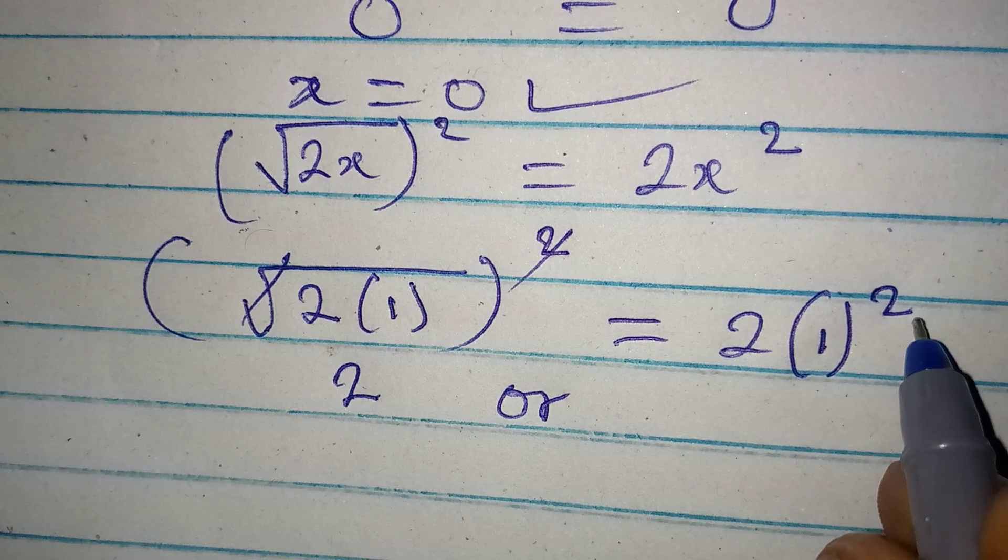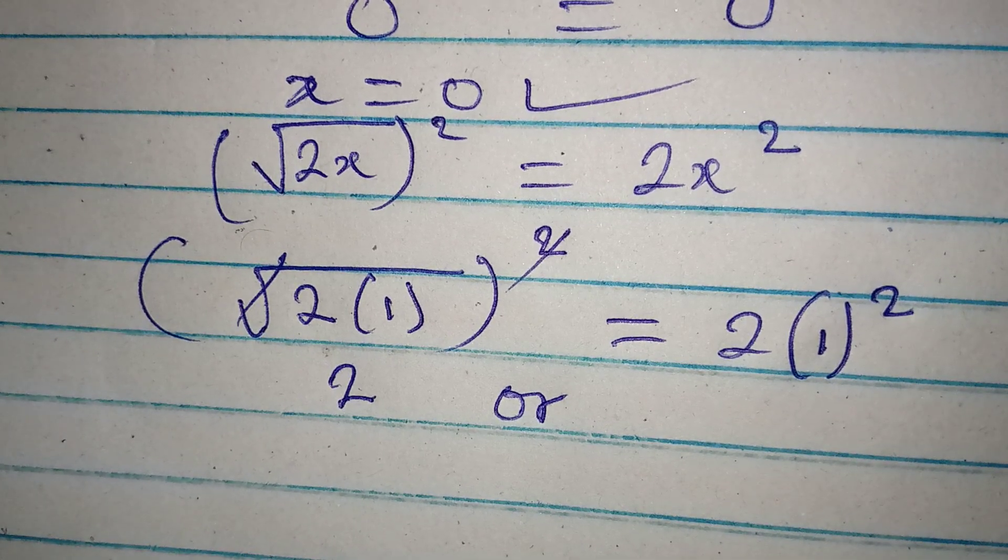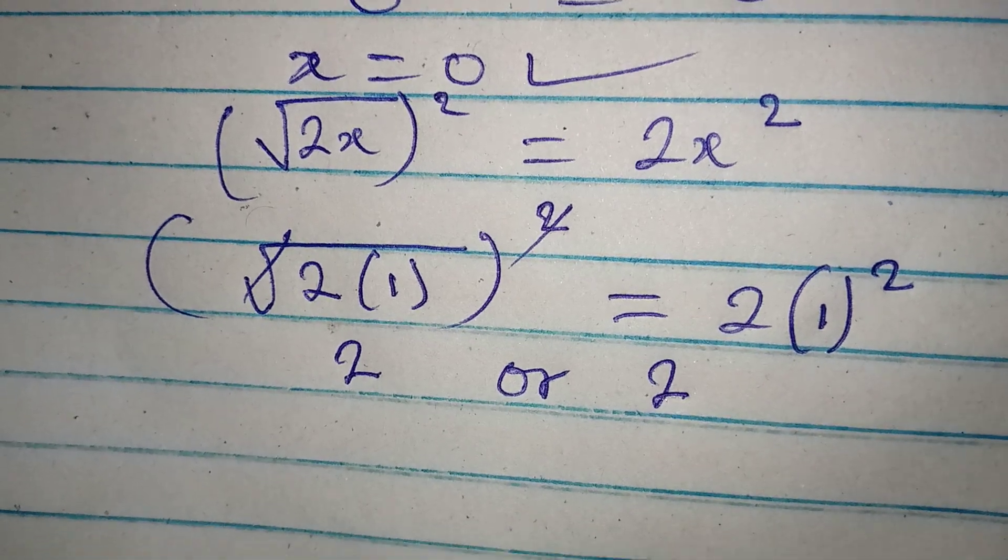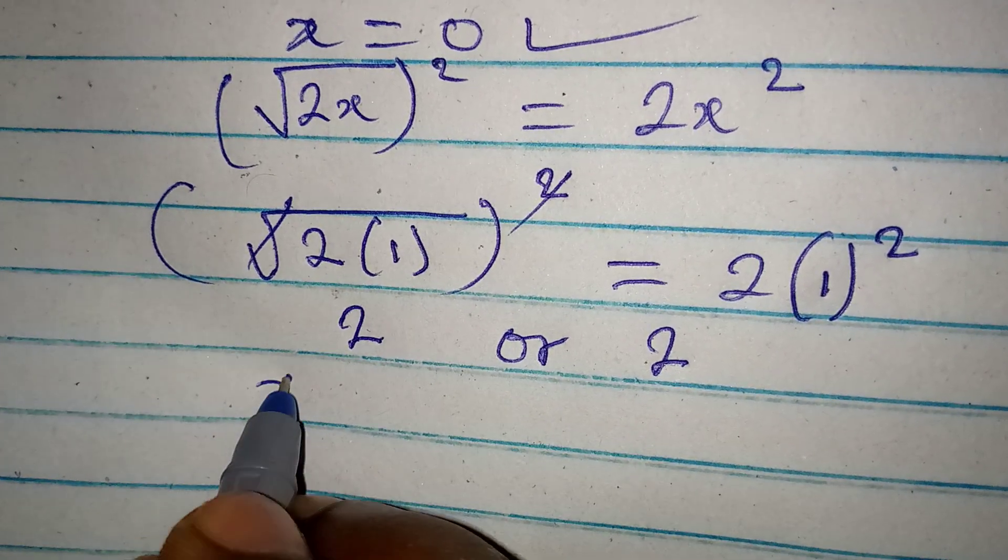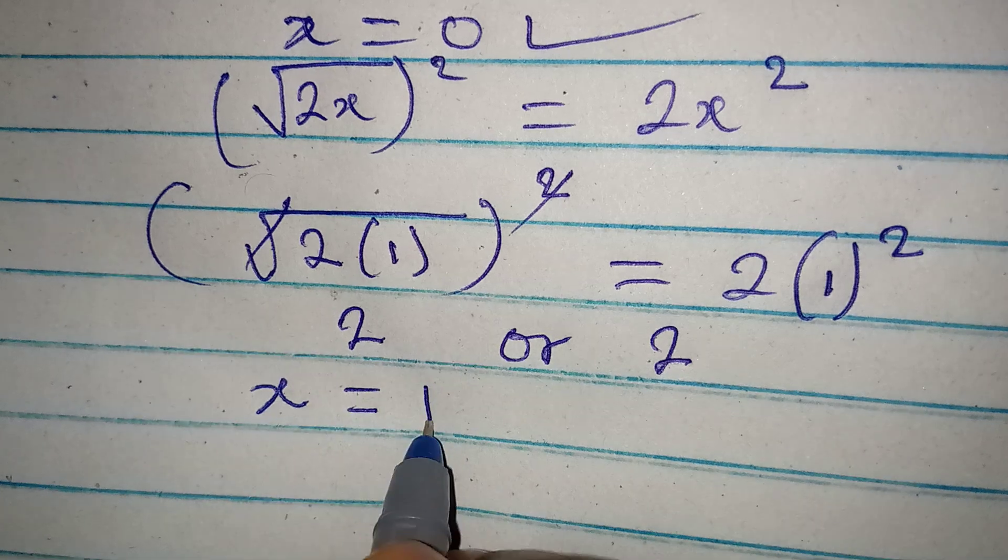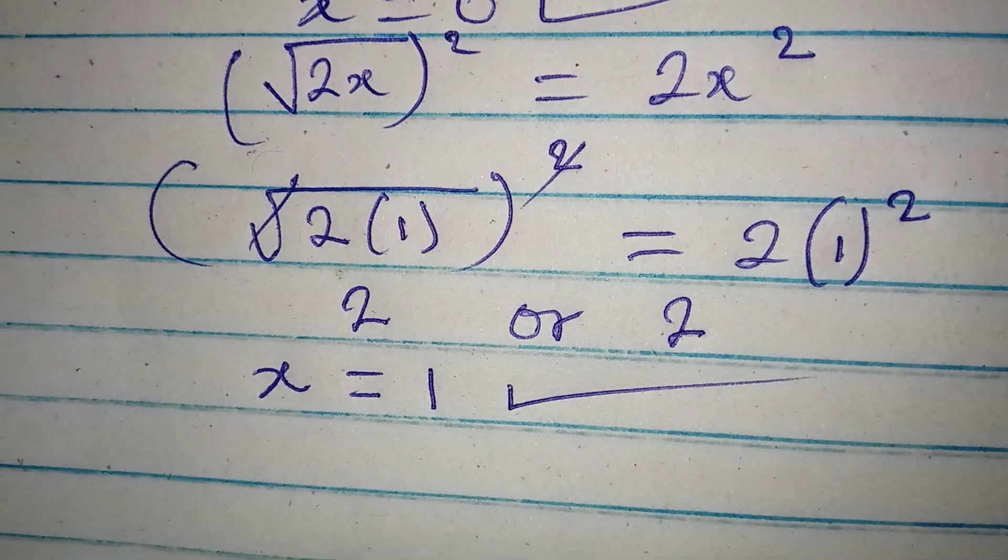Or square root of square of 1 is 2, sorry square of 1 is 1, then 1 times 2 is 2. This also means that x is equal to 1 is satisfying the equation.